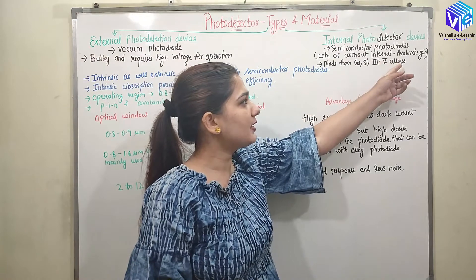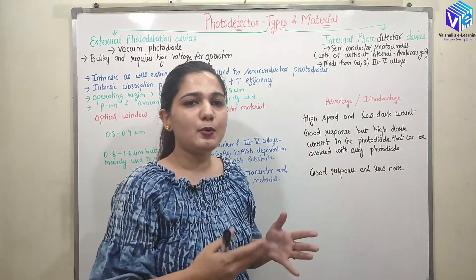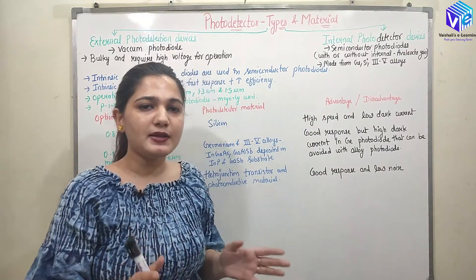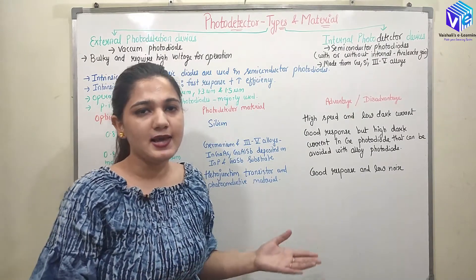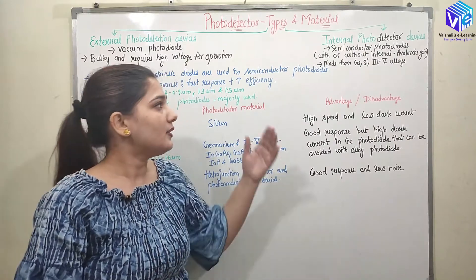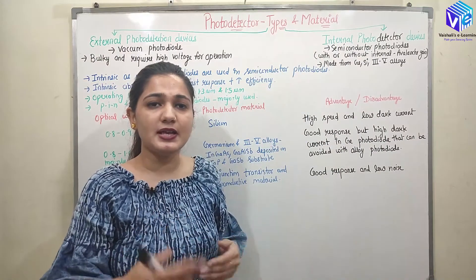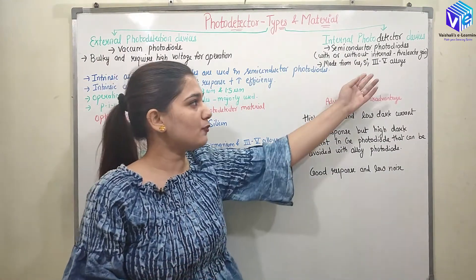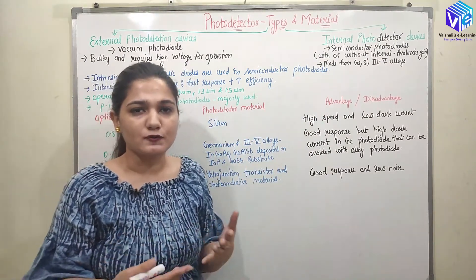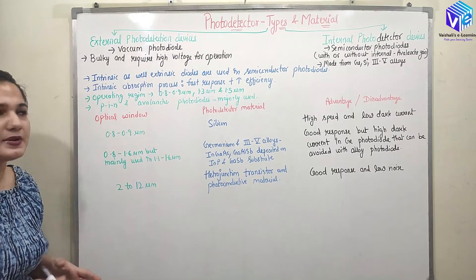Internal photodetectors can operate with or without internal avalanche gain. If they have gain, they will provide amplification in the output received signal. If they do not have gain, they will give the signal as detected, without amplification. For example, we have germanium and silicon as two semiconductors. We can also make semiconductors using Group 3 and Group 5 alloys, like indium phosphide, or Group 3-4 alloy semiconductors.